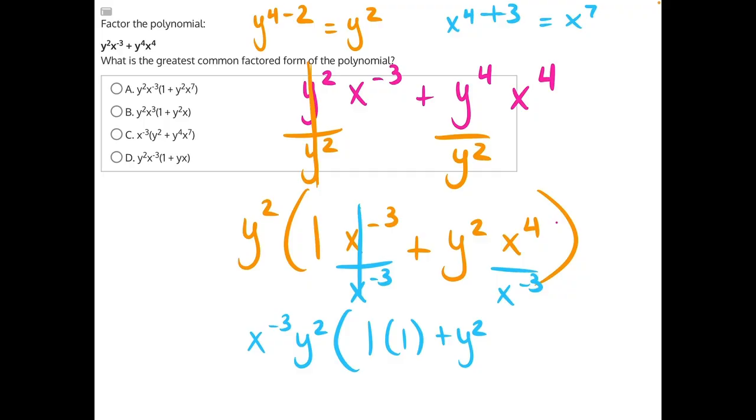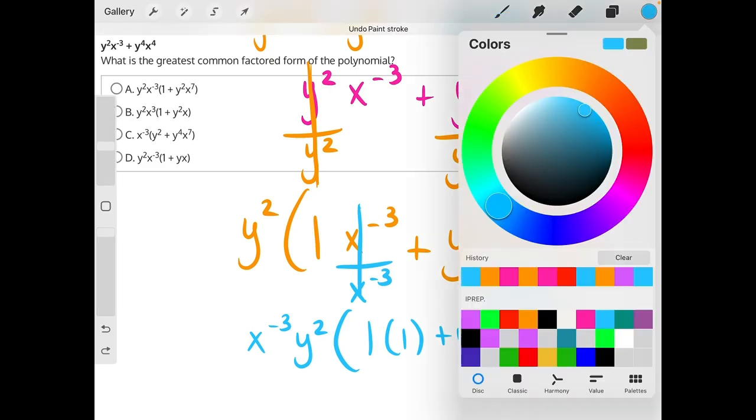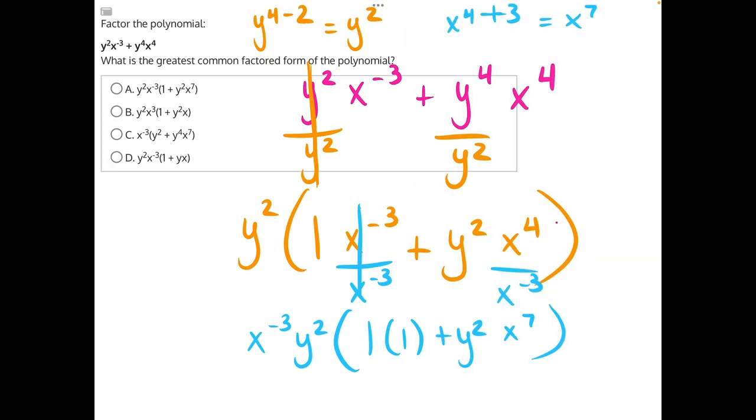So you really want to make sure you're subtracting the negative there because that can completely change how your math turns out. So this result will be x to the seven. And now we just need to simplify this multiplication here, which will just be one times one is equal to one plus y squared x to the seven.